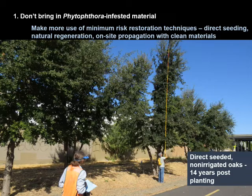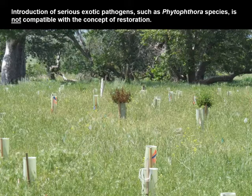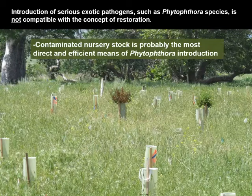This is the type of thing we want to do when possible — minimizing risk in restoration techniques by using either natural regeneration, direct seeding, or on-site propagation with clean materials such as cuttings for things like willows and cottonwoods. The issue is that in restoration we're trying to improve a site, and if we're introducing exotic pathogens, we're not improving but degrading it, which is really not compatible with restoration.